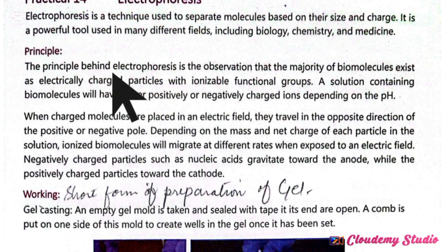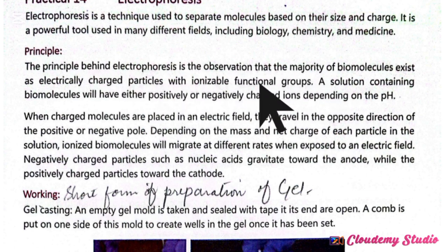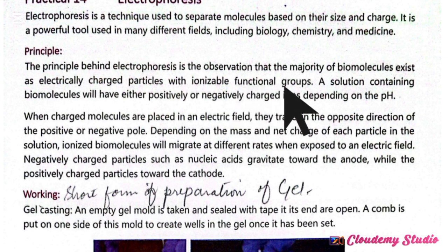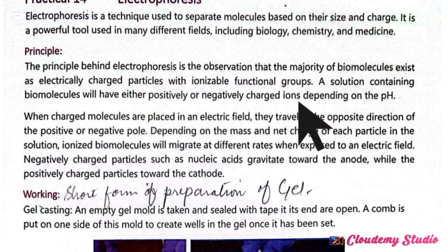The principle behind electrophoresis is the observation that the majority of biomolecules exist as electrically charged particles. The molecules we use in electrophoresis are charged particles because we use an electric field, which drives movement in gel electrophoresis. It is very necessary for particles to be charged, and mostly biomolecules are charged with ionizable functional groups. Our solution containing biomolecules will have either positively or negatively charged ions depending on the pH, because pH affects the charges.